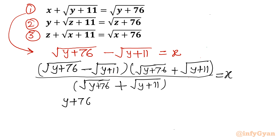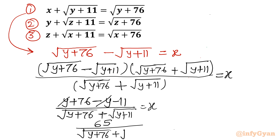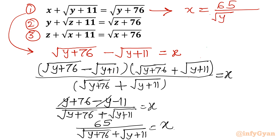Using the difference of two squares, (a + b)(a − b), we write: (y + 76) minus (y + 11) over square root of (y + 76) plus square root of (y + 11), equal to x. We can cancel y and minus y, which gives us 65 over square root of (y + 76) plus square root of (y + 11), equal to x. So the conclusion is: x equals 65 over square root of (y + 76) plus square root of (y + 11).